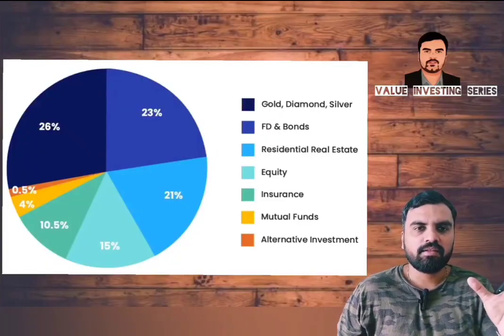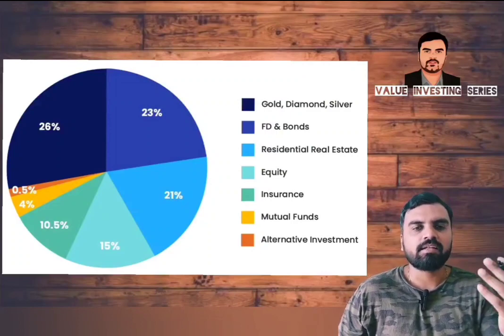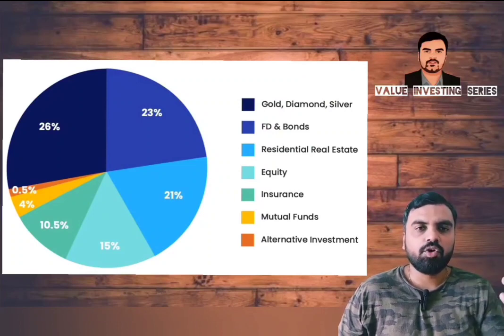As the word indicates, it's a funding which is actually raised from a group of investors, otherwise called a crowd. There is a limitation for this — the number of investors should not be more than 200. You can see on my screen the concentration of wealth in our country across various asset classes. Trillions of dollars of wealth is locked out in physical assets like gold, diamond, silver, real estate, etc.